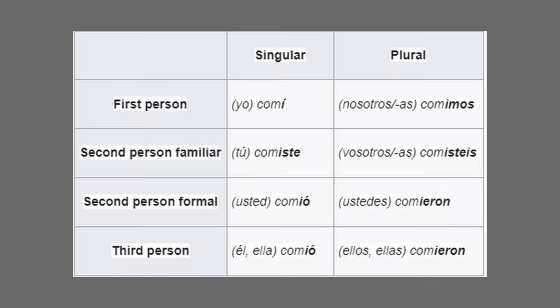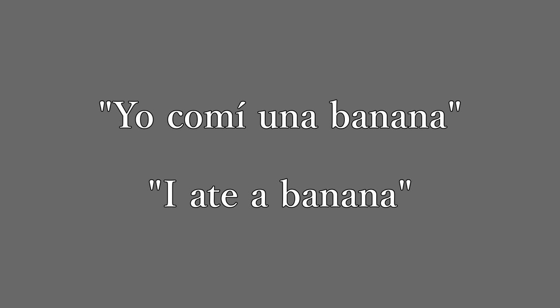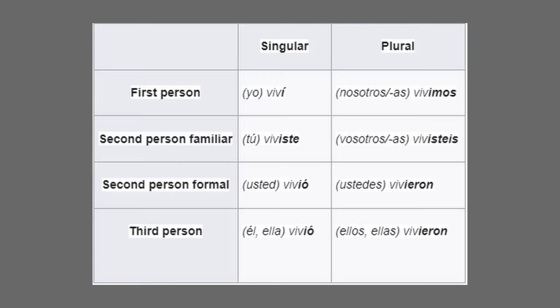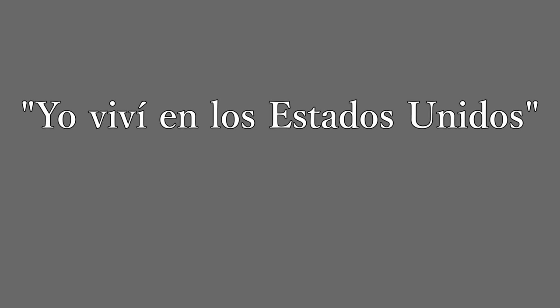Using the verb comer in the preterite: yo comí (I ate), tú comiste (you ate), usted comió (you ate formally), él/ella comió (he/she ate), ustedes comieron (you all ate), ellos/ellas comieron (they ate). Example: yo comí una banana — I ate a banana. Using vivir: yo viví (I lived), tú viviste (you lived), usted vivió (you lived formally), él/ella vivió (he/she lived), nosotros vivimos (we lived), vosotros vivisteis (you all lived), ustedes vivieron (you all lived), ellos/ellas vivieron (they lived). Example: yo viví en los Estados Unidos — I lived in the United States.